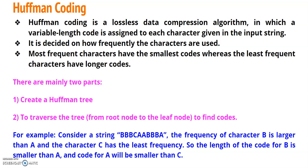There are mainly two parts in the entire Huffman coding. The first part consists of creation of a Huffman tree, and the second part consists of generation of the code for each symbol — that is, we traverse the tree from root node to the leaf node to find the actual code for each and every symbol in the given string.